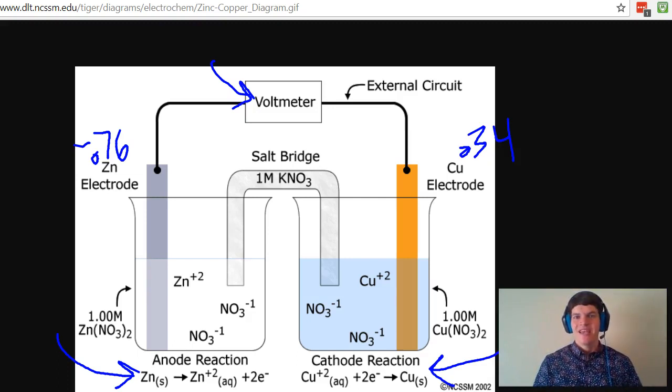Now, in an electrolytic cell, the opposite will happen because we're replacing the voltmeter with a battery. So it will power the reaction in the opposite direction. An electrolytic cell is using an external energy source to push a non-spontaneous reaction to occur. Therefore, we would expect copper to be oxidized in an electrolytic cell.